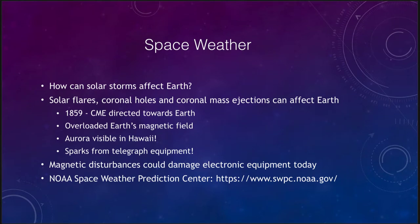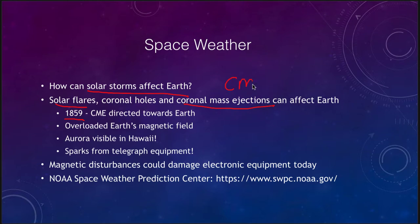Solar storms — can they affect the Earth? Yes, solar flares, coronal holes, and coronal mass ejections can have an impact on the Earth. In fact, the last major coronal mass ejection that really struck directly on the Earth was back in 1859. That CME struck the Earth and overloaded the Earth's magnetic field. The Earth's magnetic field is what normally protects us from this kind of thing.